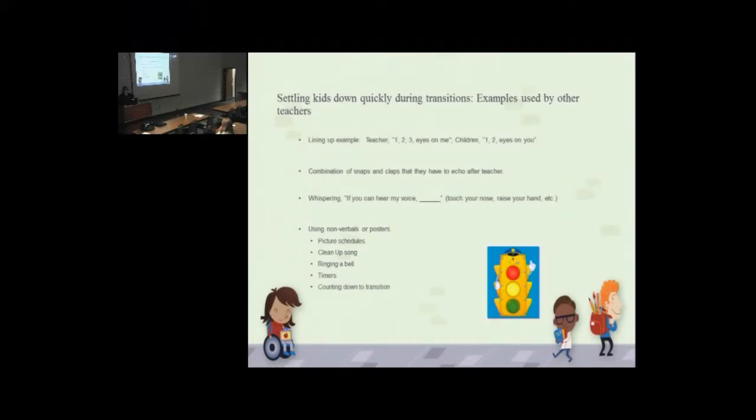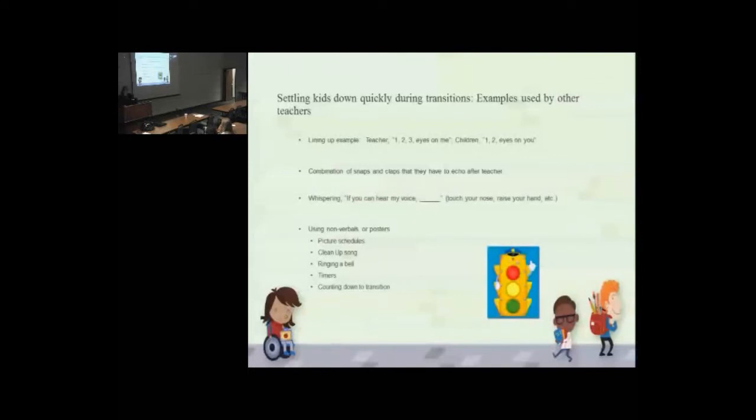So, with younger kids, things like lining up examples where the teacher will say, one, two, three eyes on me, and then the kids will repeat it back. So, it gives them something specific to do, something concrete to do to settle them once they've reached where they're going.